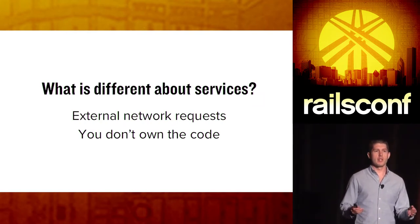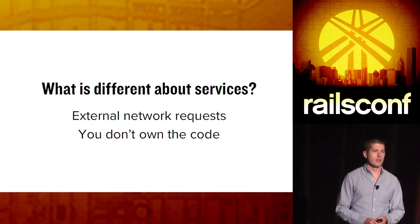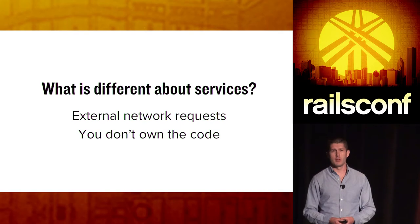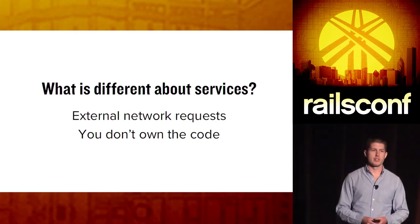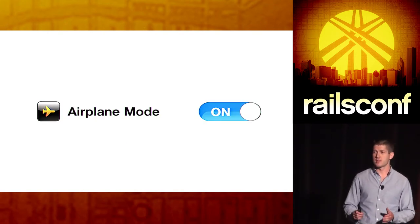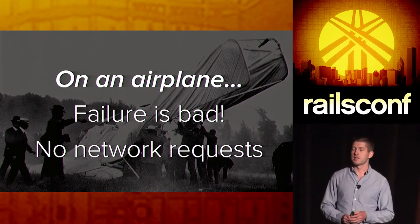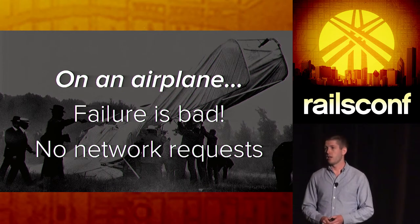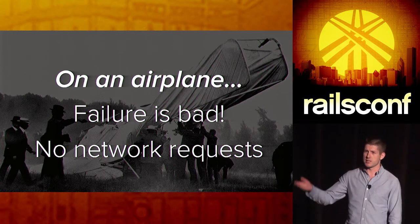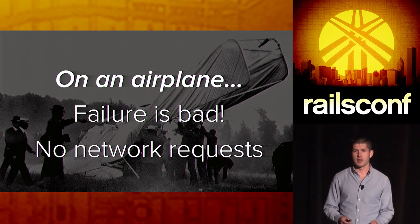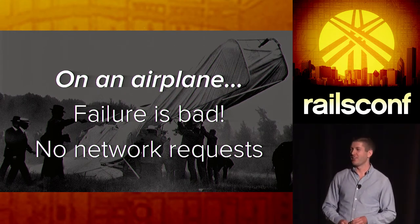Now that we've talked about why it's important and outlined some of the problems you might encounter, we're going to talk about how you're actually going to test these. First we need to ask ourselves, what is different about services than regular code? Well, first of all, we have external network requests being made. And second, you don't own the code, so you can't really do unit testing on it — it all has to be done from an integration test perspective. What I propose is that you turn airplane mode on. This is the best way to think about your tests, because failure is really bad in testing and you shouldn't be making any network requests. It should be a test that you can run on an airplane — meaning if you're on a long transatlantic flight or in the RailsConf lobby, you can still run your tests and they won't fail because of network issues.